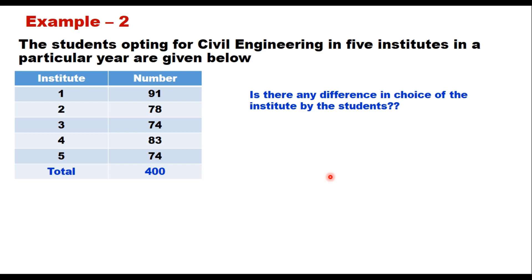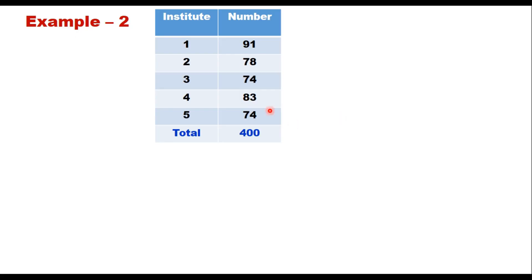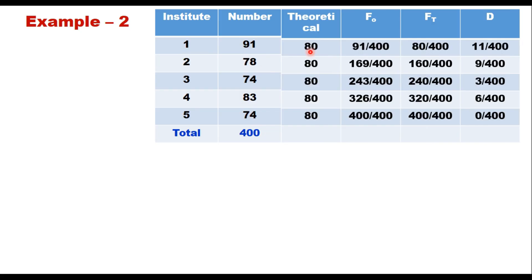Example 2: Students opting for civil engineering in five different institutes in a particular year are given. There are 400 total students: 91 chose institute 1, 78 chose institute 2, and so on. The question is whether there is any difference in the students' choice of institute. Theoretically, if there is no preference, the 400 students must be distributed equally across five institutes — 80 per institute — and that is the theoretical distribution.